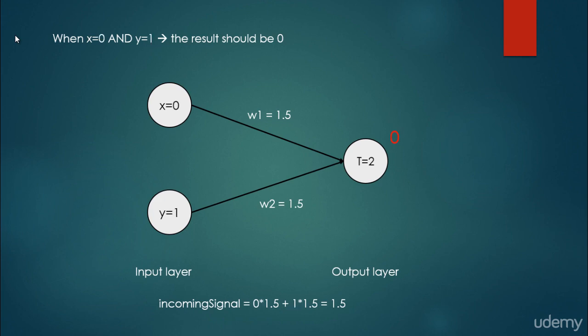What about the situation when x is equal to 0 and y is equal to 1? That is the third line in our logical table, and our neural network should produce 0. The incoming signal is 0 times 1.5 plus 1 times 1.5. We calculate each neuron's value times its weight to the output layer and sum them up, giving us 1.5. It is less than the threshold of 2, so the output neuron does not fire and yields 0, which matches our logical table.